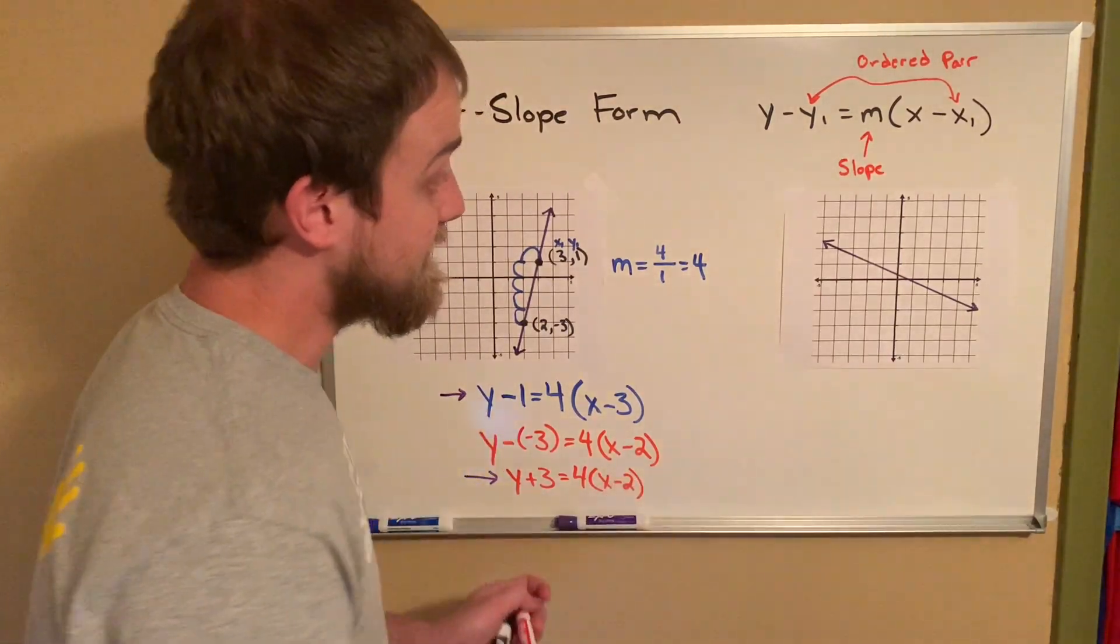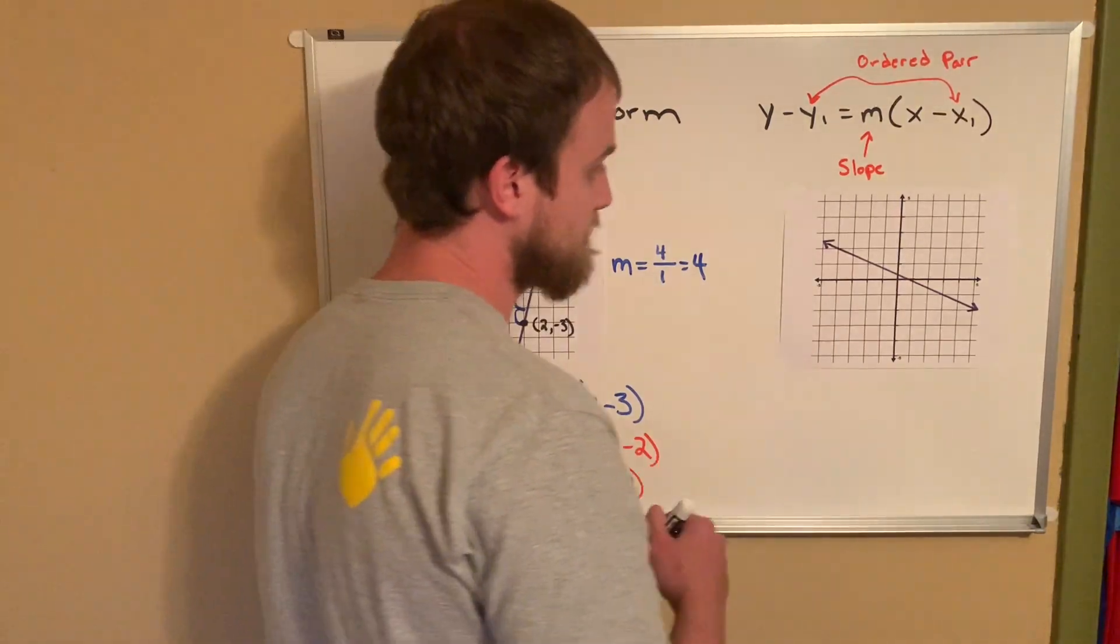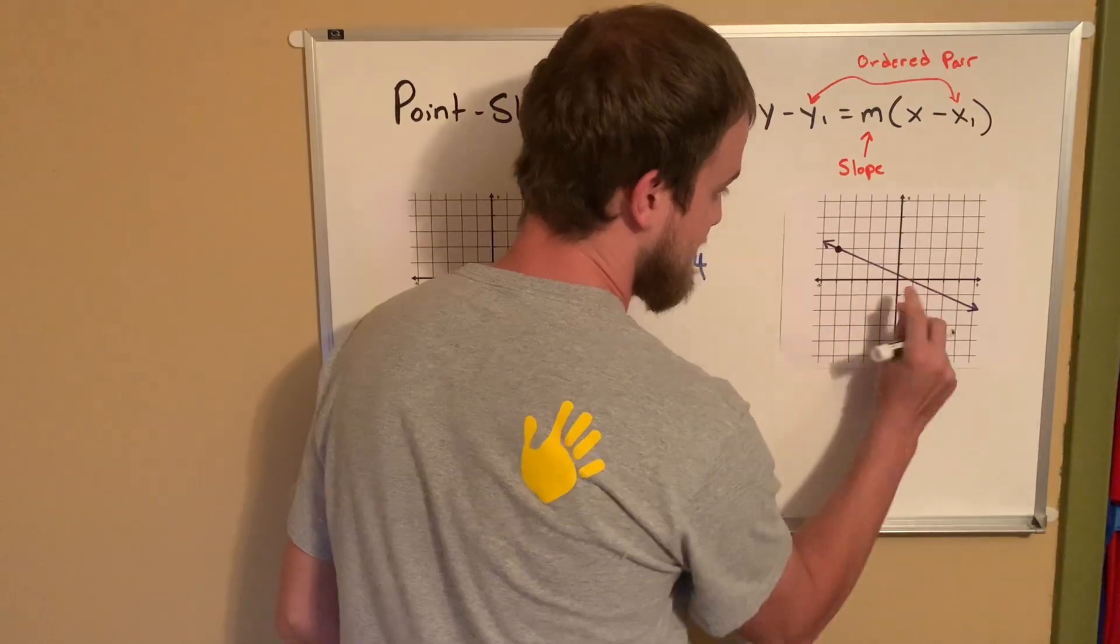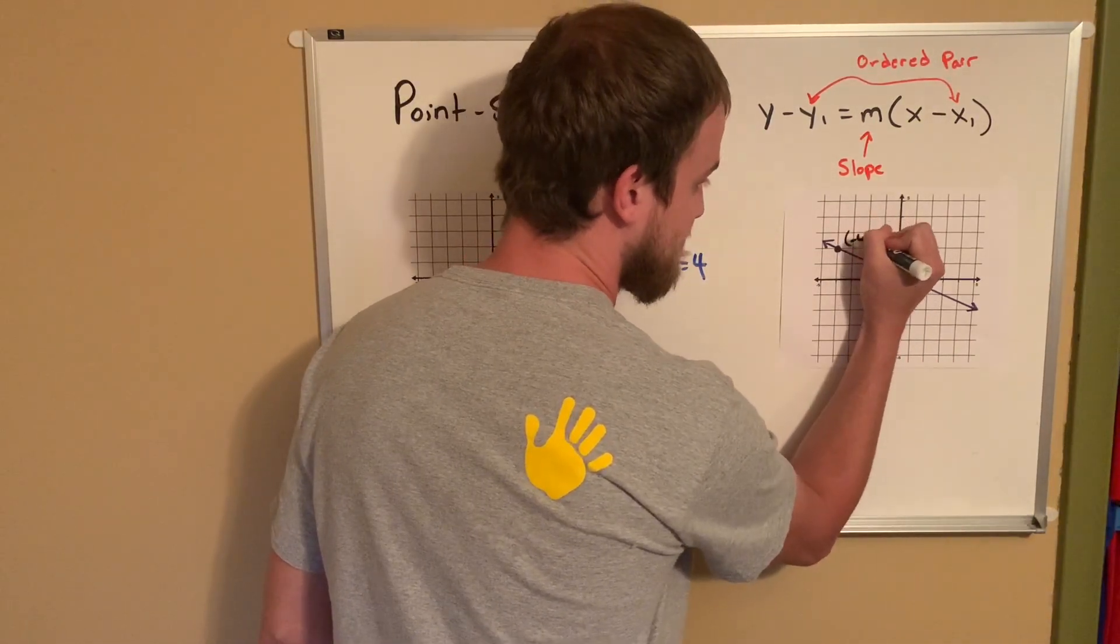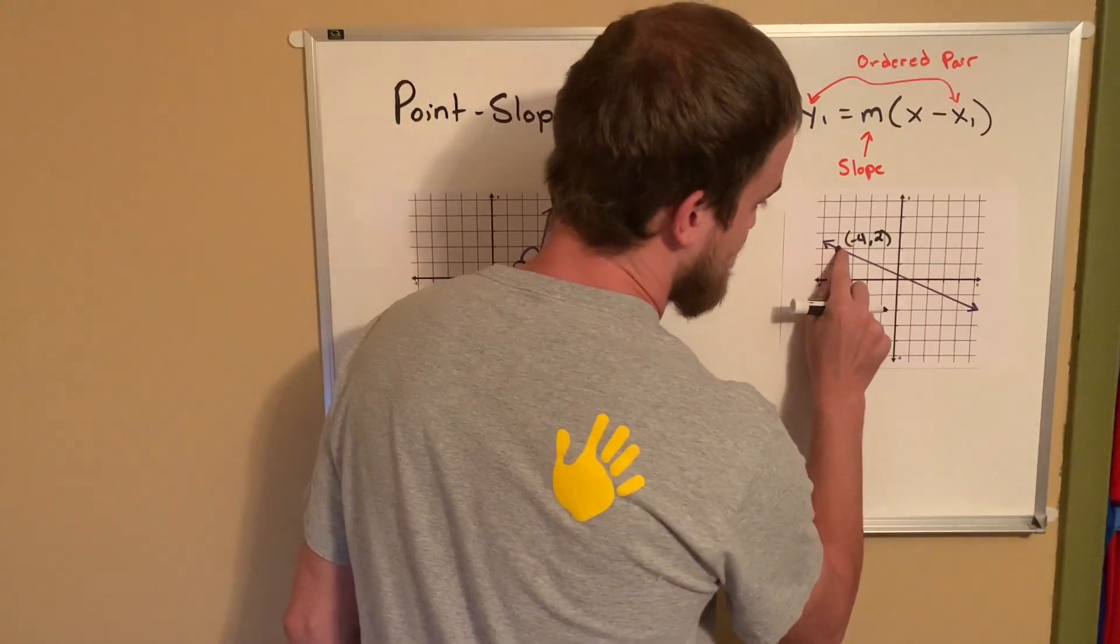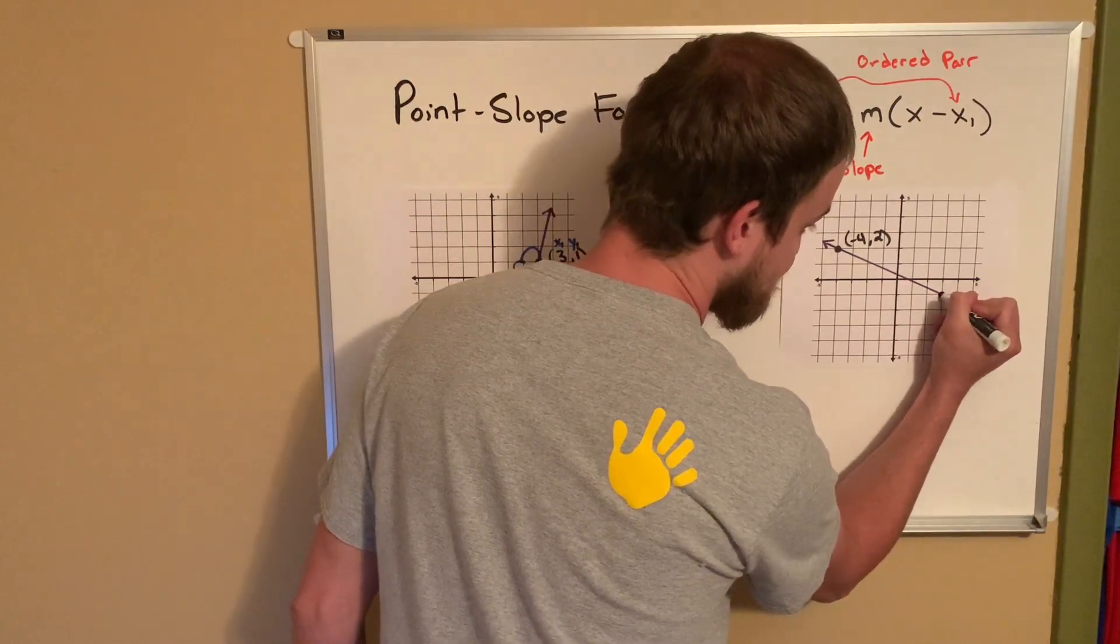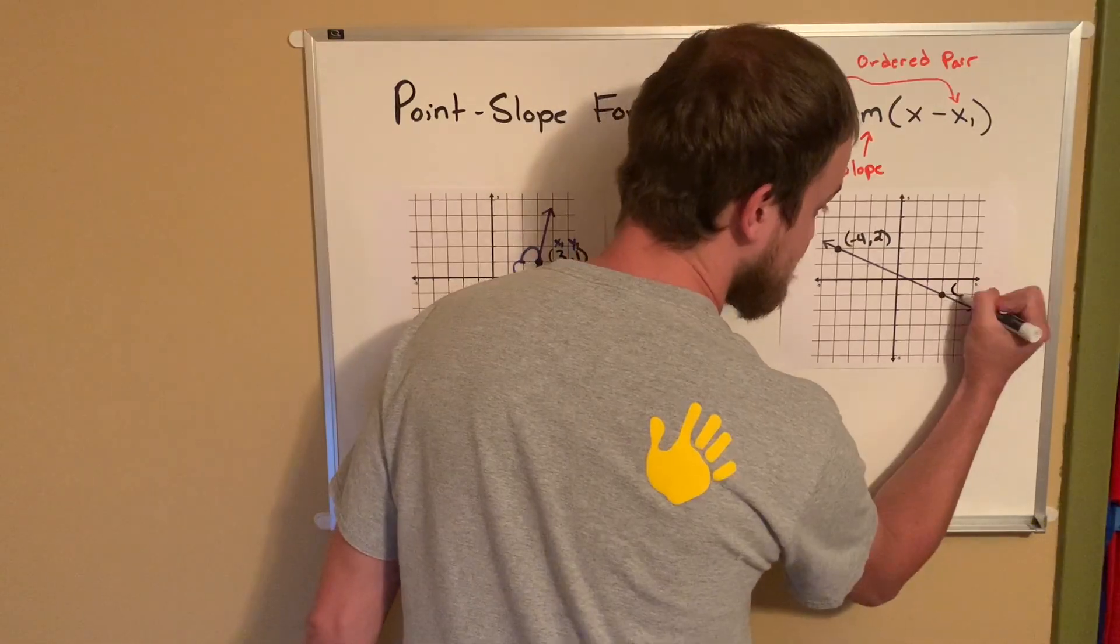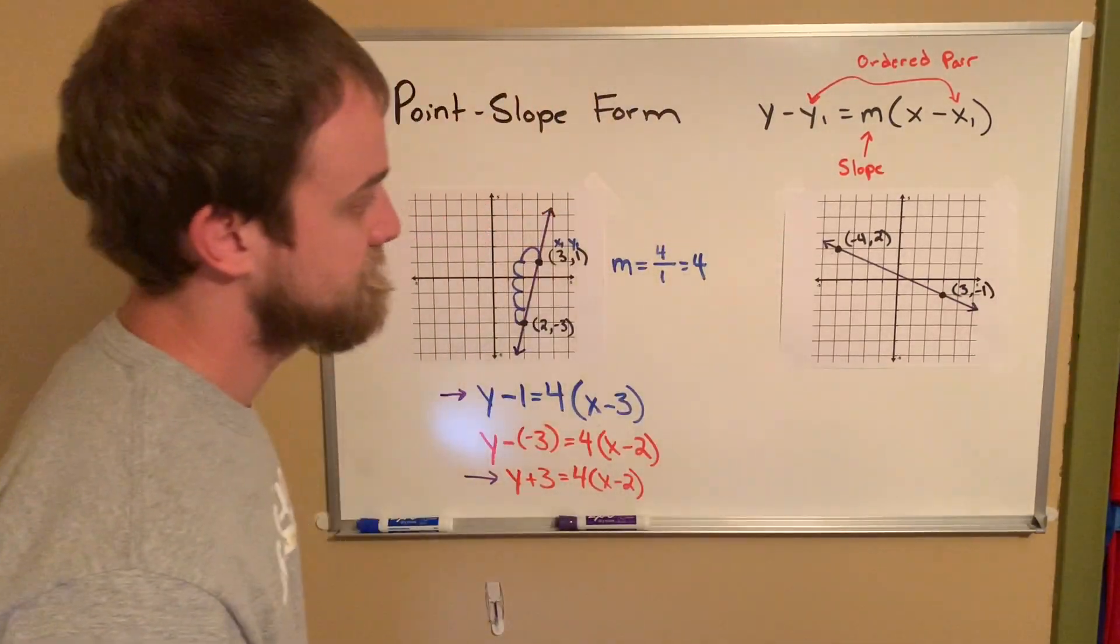Last example that I have for you today, identify two ordered pairs so that we can find the slope. Well, look in our line. Here's one. That's the ordered pair 1, 2, 3, 4 left. So that would be negative 4, 2. And travel down our line, looking for an ordered pair. Ah, it looks like right here is another one. That would be the ordered pair 1, 2, 3, negative 1.